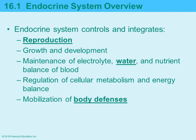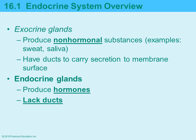The endocrine system as a whole helps regulate reproduction, growth and development. It plays a huge role in maintaining the proper balance of water and electrolytes such as sodium, calcium, and potassium — all of which must be maintained within certain levels to maintain homeostasis. It is also involved with regulation of cellular metabolism, energy balance, and plays a role with the defenses the body has.